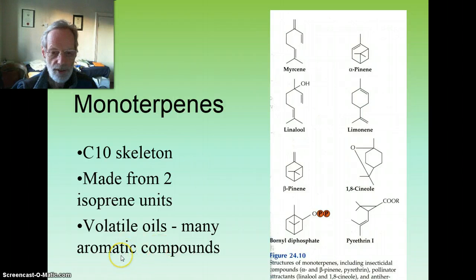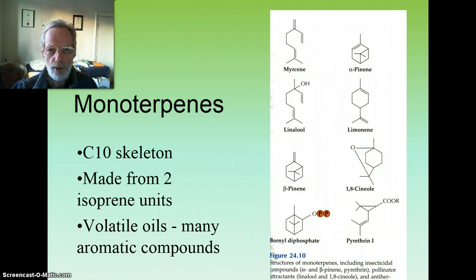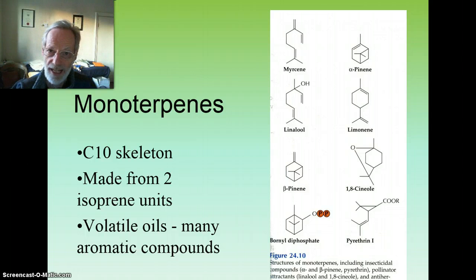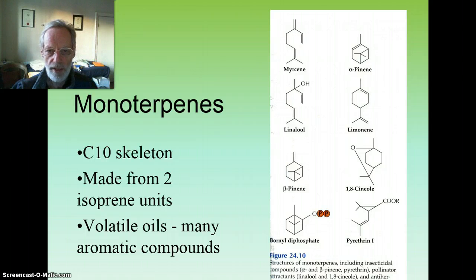Some of the monoterpenes are aromatic, i.e. they contain benzene rings. For the plant they're often pollen attractants or signaling compounds between individual plants, and some play a defensive role. By a historical accident, monoterpenes are so called because when terpenes were first discovered in the 19th century, chemists thought that the 10-carbon monoterpenes were a basic unit of terpene synthesis. Who says that scientists are always logical in their naming systems? Not stubborn and old-fashioned at all.